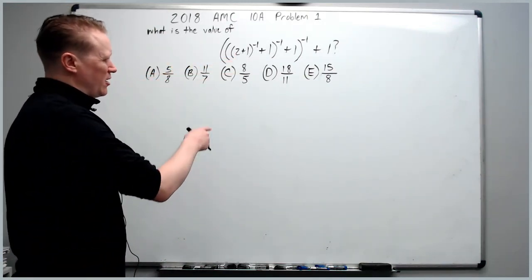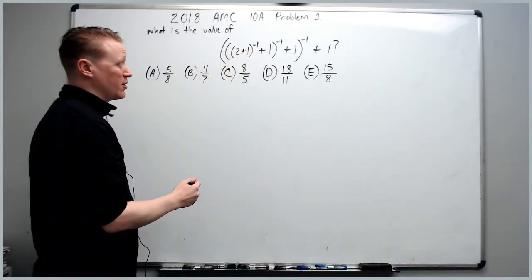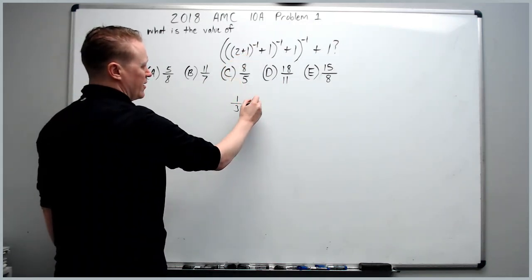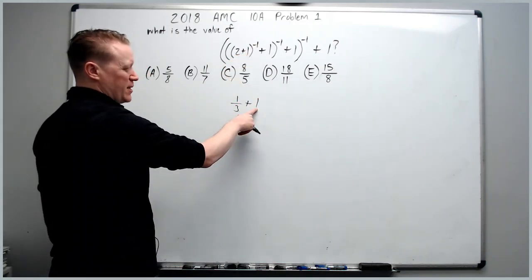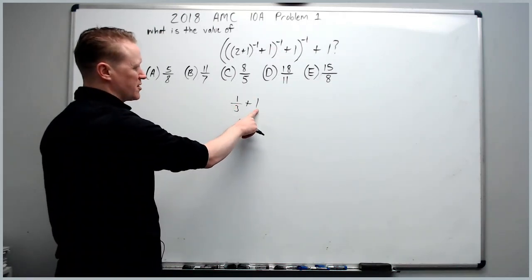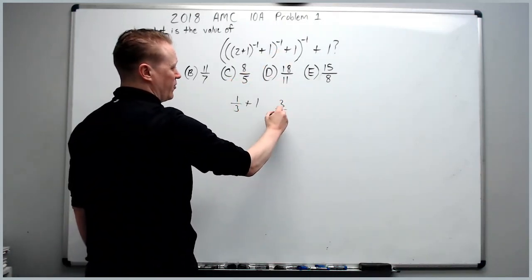The first thing you need to know to work quickly through this problem is that anything to the negative one power is just the reciprocal. So three to the negative one is one third. Add one, you should mentally be converting one to three thirds as you're doing this. So one third plus three thirds is four thirds.